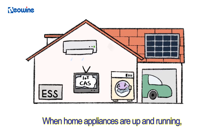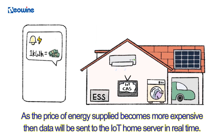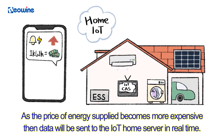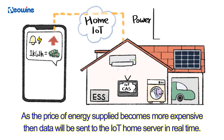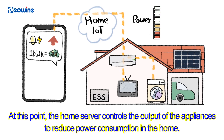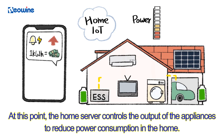When home appliances are up and running and the price of energy supplied becomes more expensive, data will be sent to the IoT home server in real time. At this point, the home server controls the output of the appliances to reduce power consumption in the home.